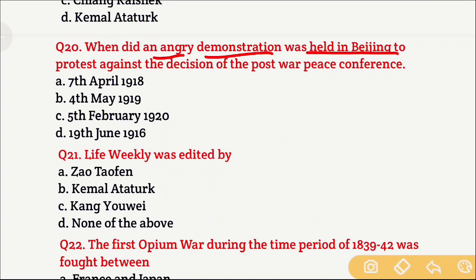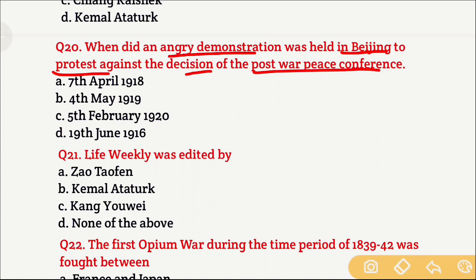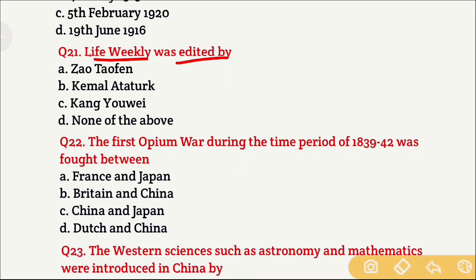Question 20: When was an angry demonstration held in Beijing to protest against the decision of the post-war peace conference? Option A is 7th April 1918, Option B is 4th May 1919, Option C is 5th February 1920, and Option D is 19th June 1916. The right answer is Option B, which is 4th May 1919.